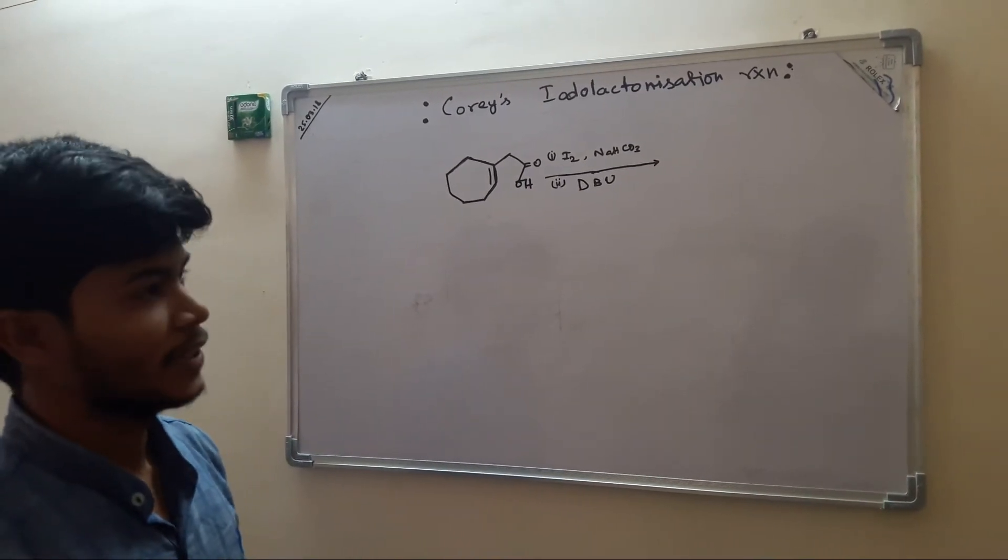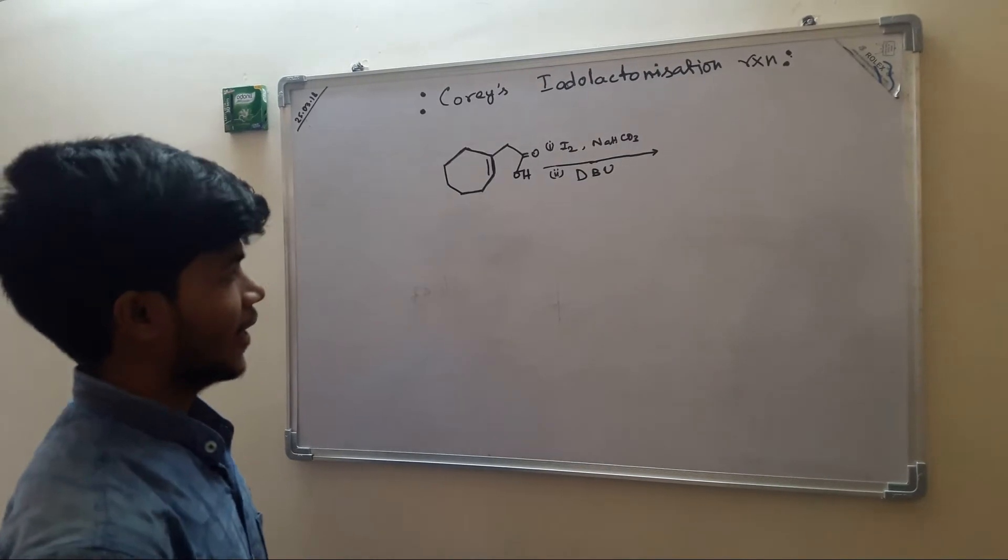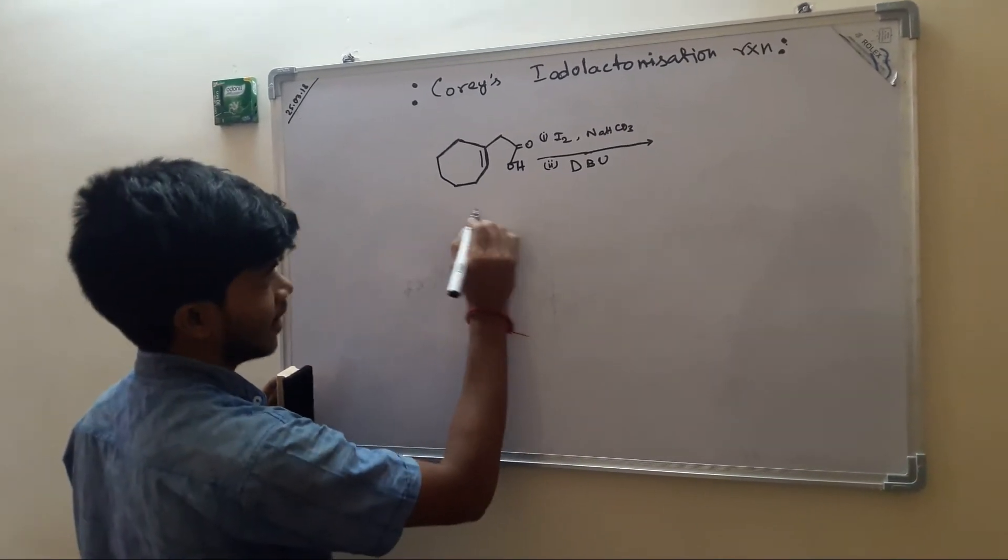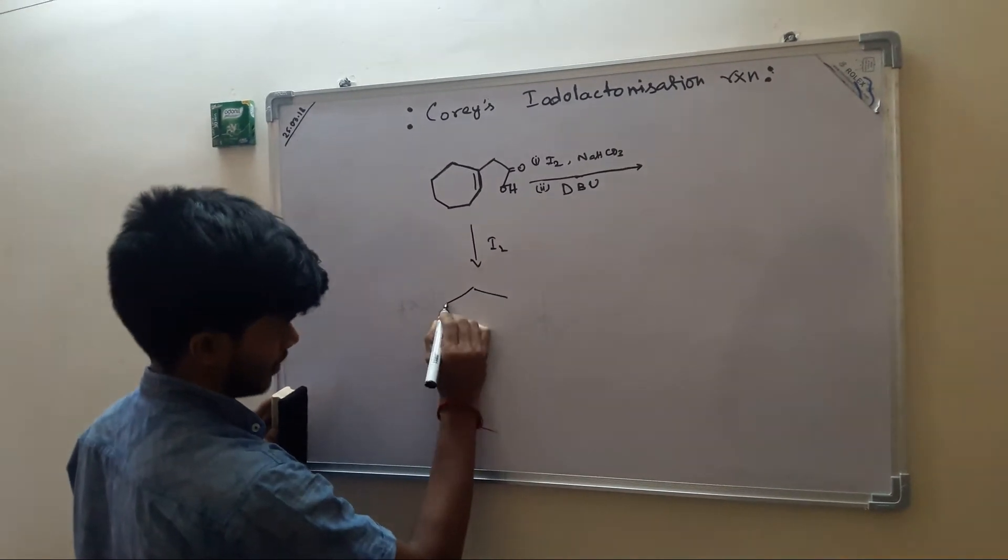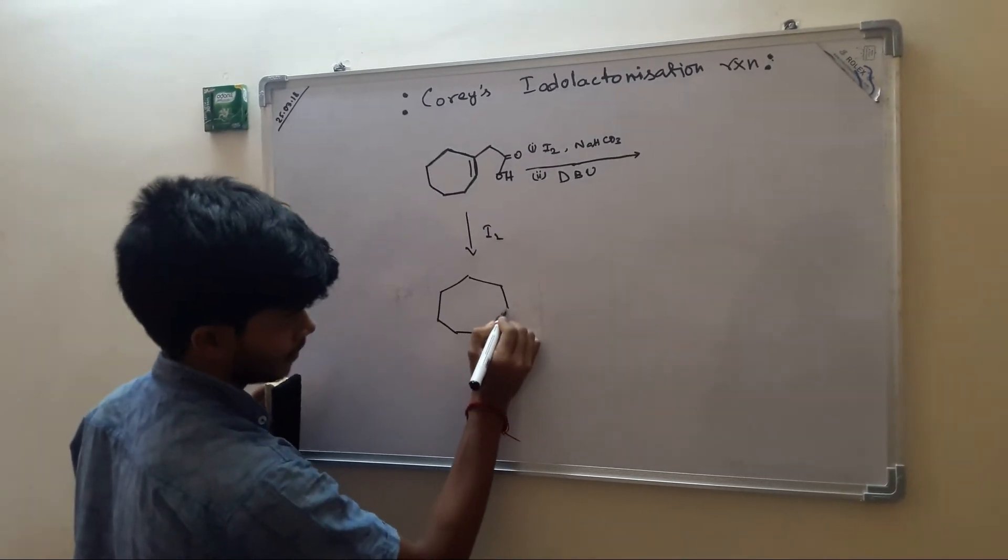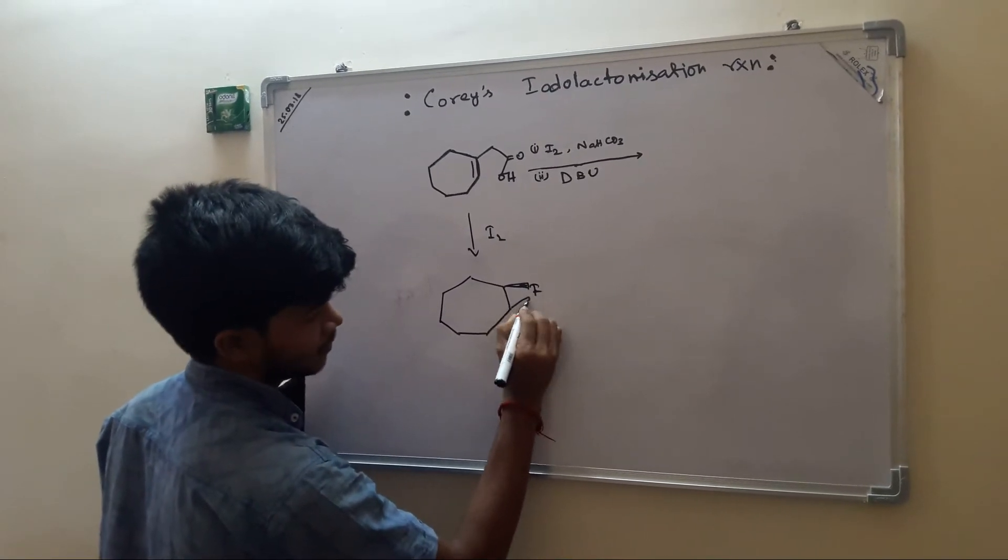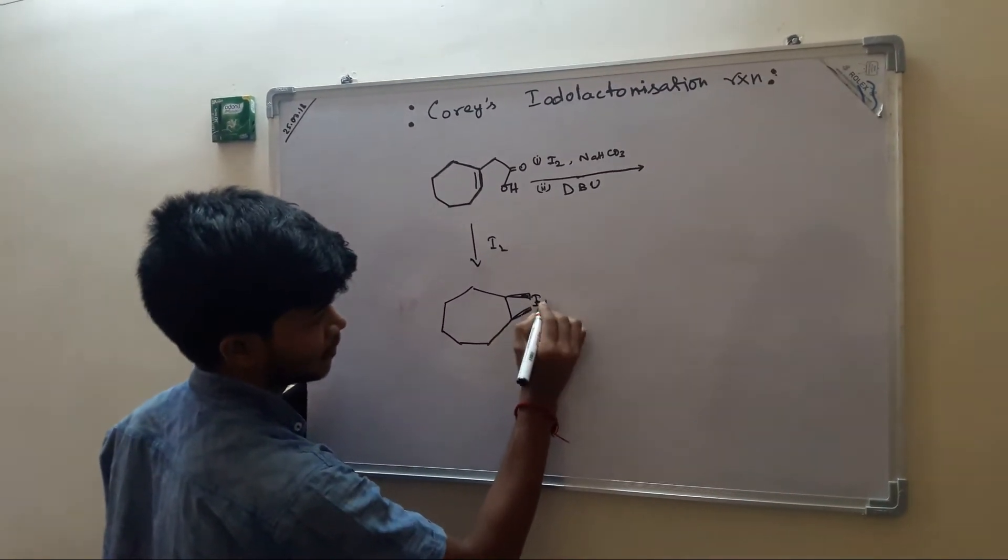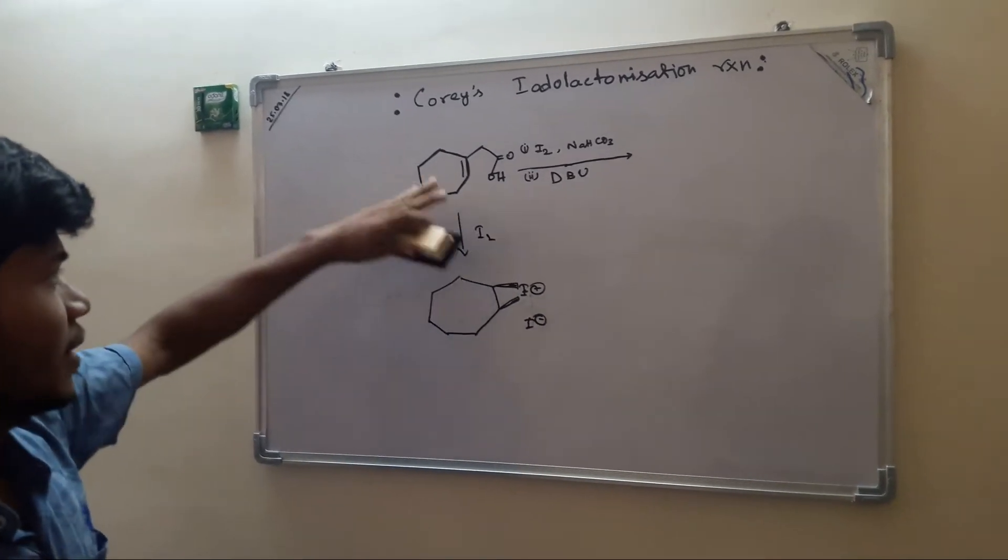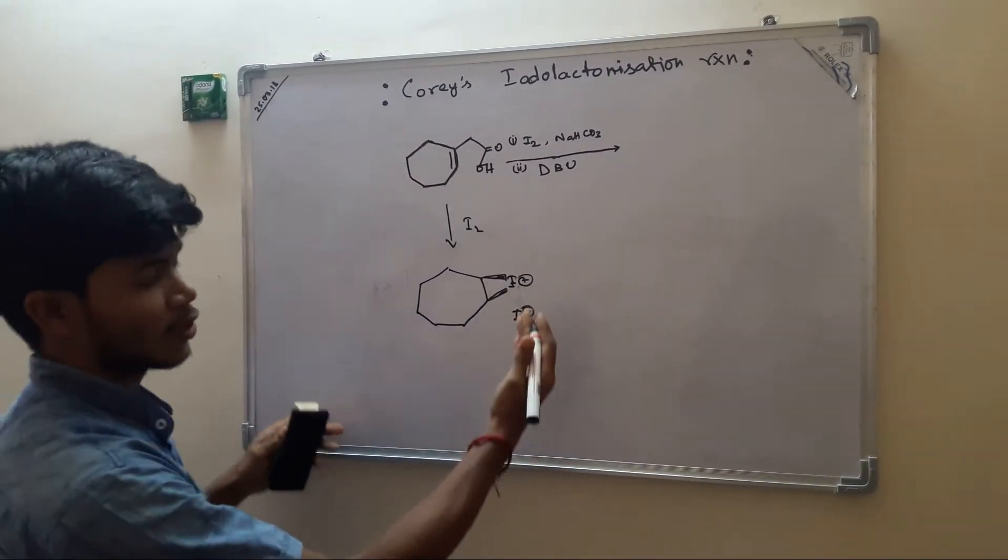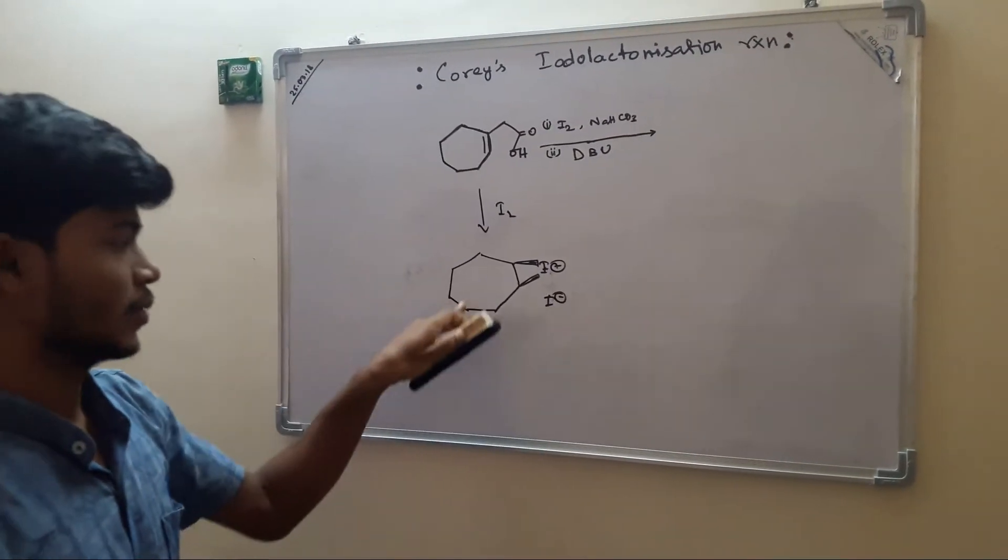As we all know, if we treat an alkene with iodine, then the iodonium salt will form I plus, I minus. As it is a flat molecule, it has two surfaces, so its corresponding enantiomer will also form. I will show you with the help of this example.